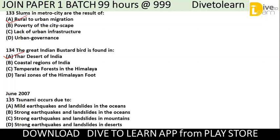Question 134 (from June 2007): Tsunami occurs due to? Options: mild earthquake and landslides in the ocean, strong earthquake and landslides in the ocean, strong earthquake and landslides in mountains, or strong earthquake and landslides in desert. The correct option is B — a strong earthquake and landslides inside the ocean.